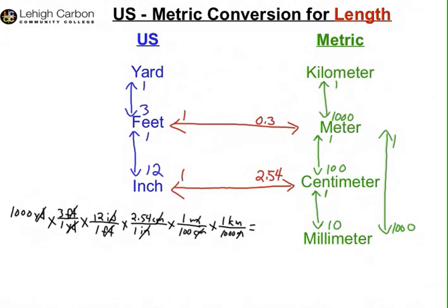So using a calculator, though it is a fair amount of steps here, it'll be quickly done with a calculator. A thousand times three times 12 times 2.54 divided by 100 and then divided again by a thousand. Your answer is about 0.9 kilometers.